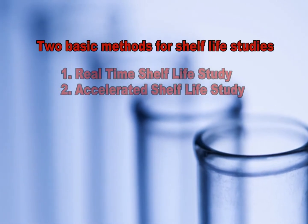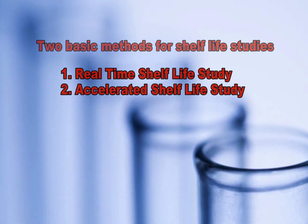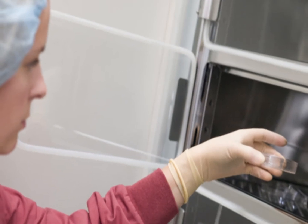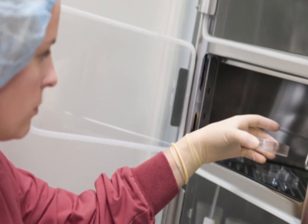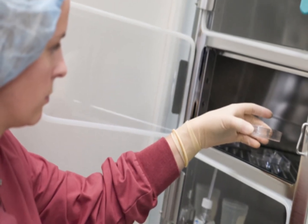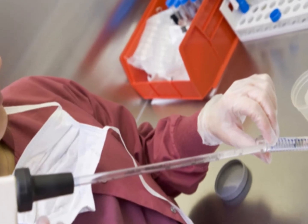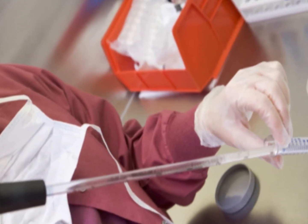There are two basic methods for performing shelf life studies: real-time and accelerated shelf life studies. Real-time studies store the product under the normal conditions of the product for a period of time greater than the expected shelf life. The product is checked at regular intervals to determine the point of product deterioration.